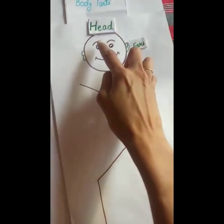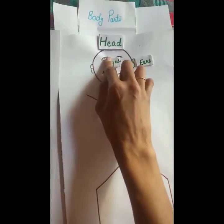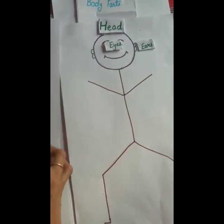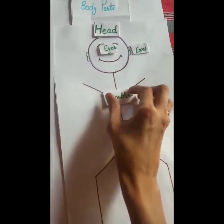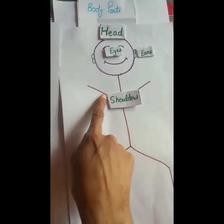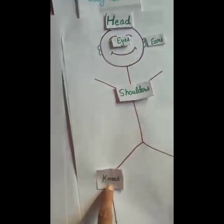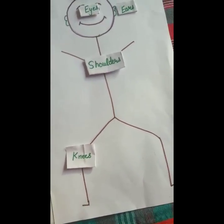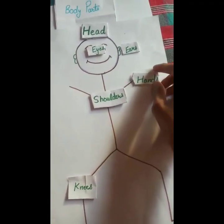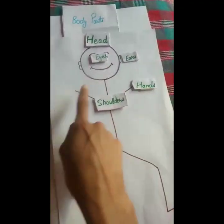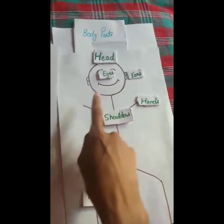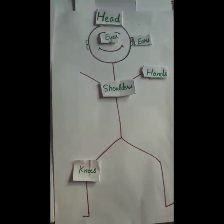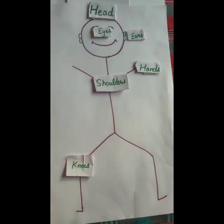These are my eyes. How many eyes do we have? We have two eyes. Touch your shoulders — these are my shoulders. These are my knees — when we sit, we bend our knees. These are my hands. How many hands do we have? We have two hands. We clap with our hands. Tomorrow we will learn about the function of each body part. Thank you.